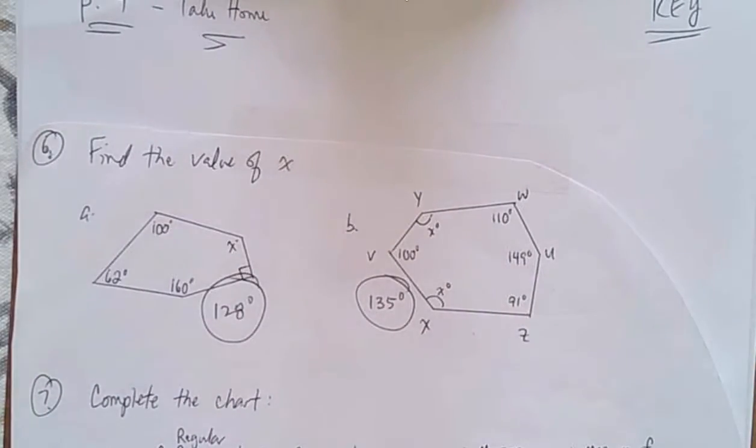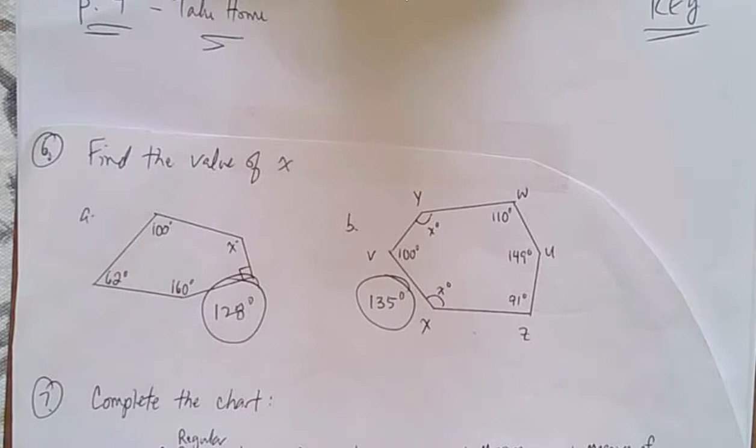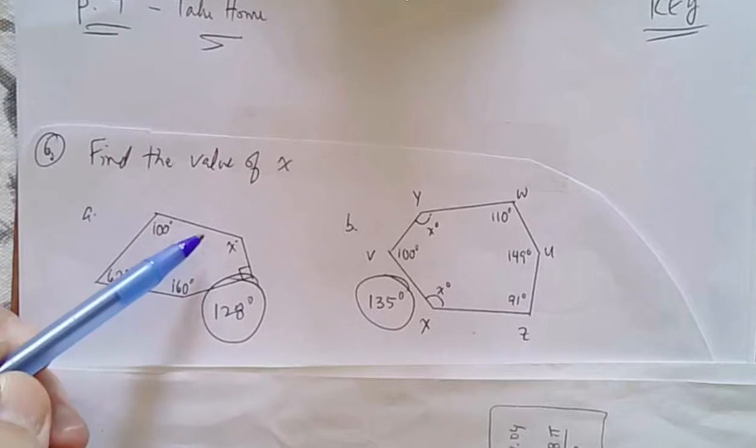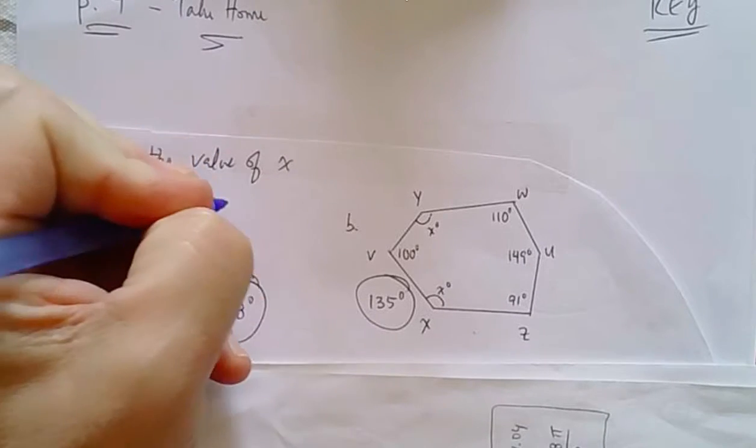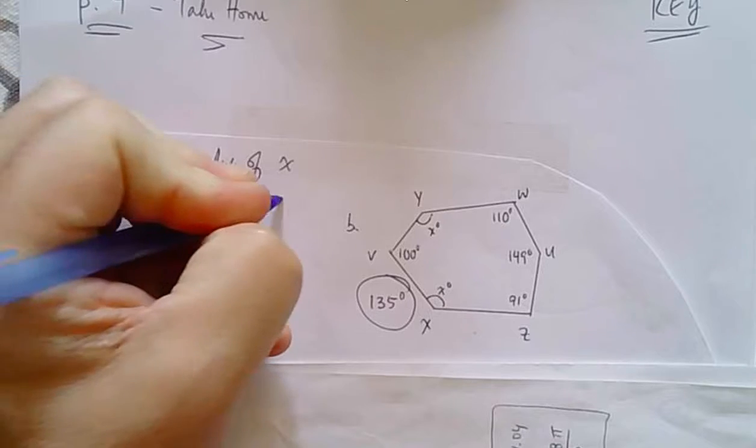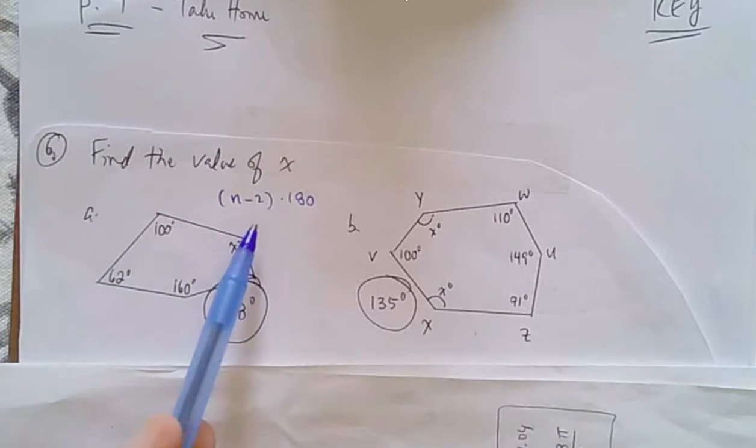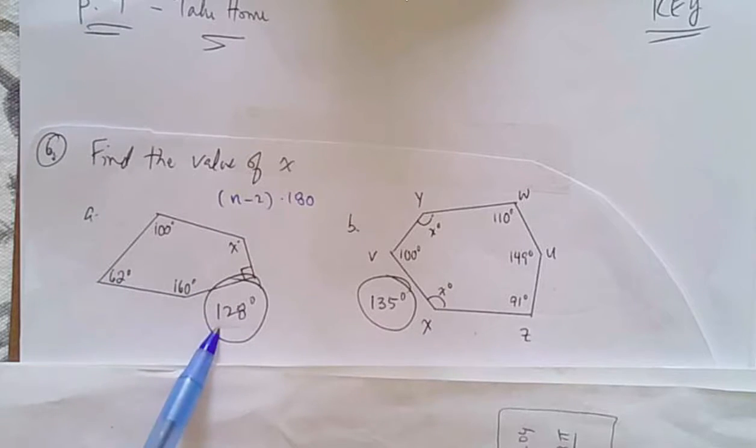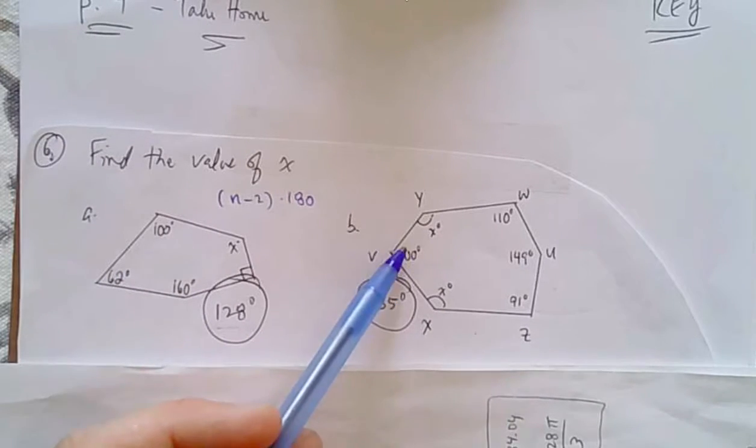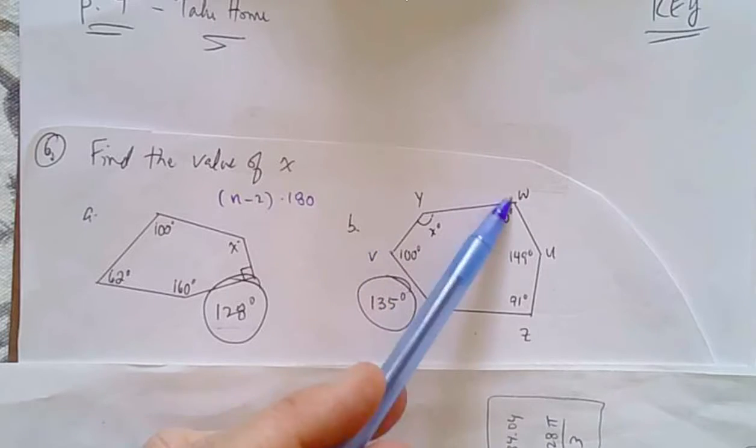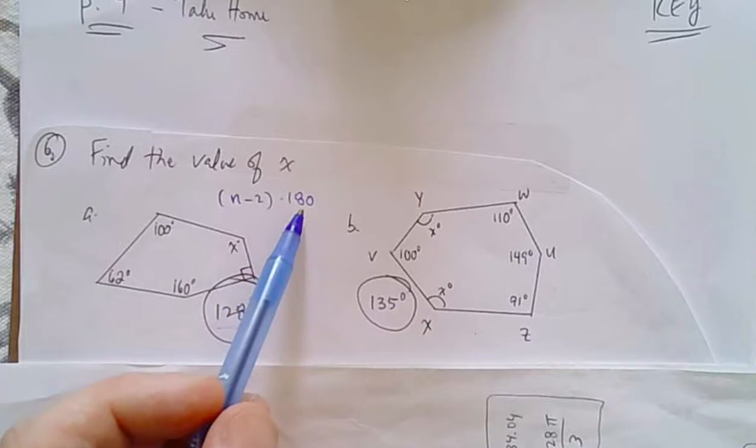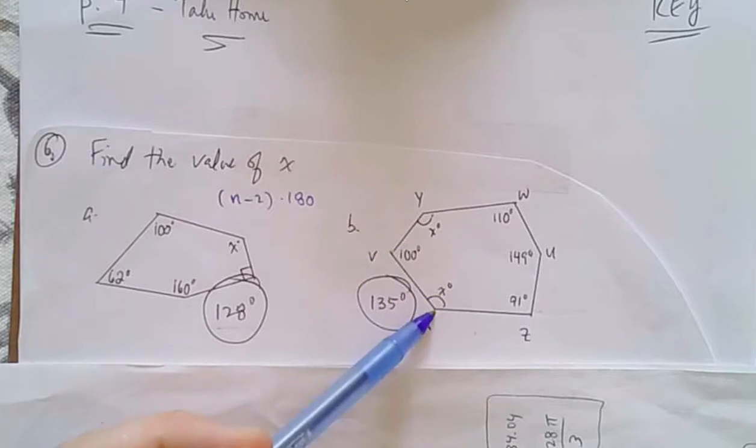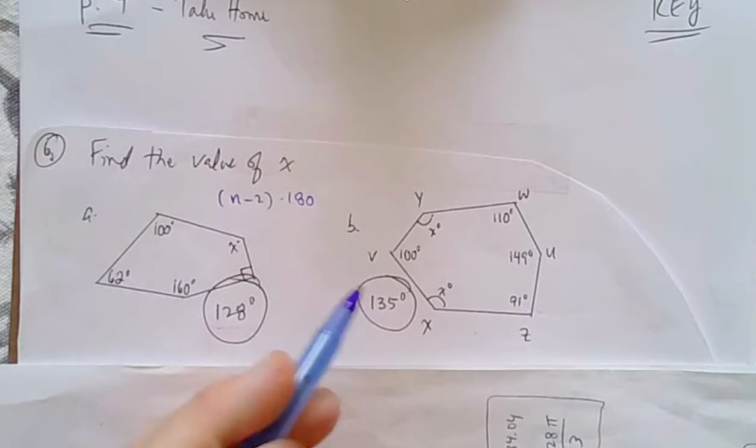And page 4, most people really got page 4 right. The first one is a pentagon, so the formula is (n-2) times 180 for the sum of all the angles. If you work that out, you get 540. Subtract the knowns and you get a missing angle of 128. Here, it's not a regular hexagon, it's a hexagon. (n-2) times 180 is 720. Subtract the knowns, and then these two are equal, so you had to divide by 2 to get 135.